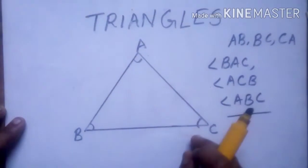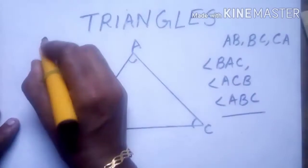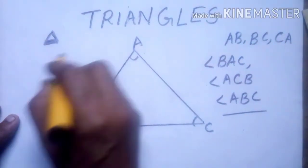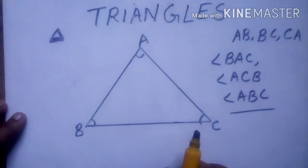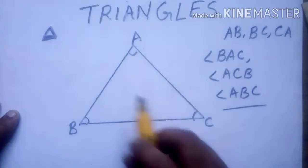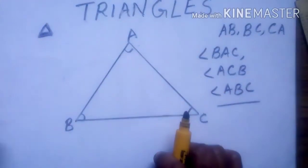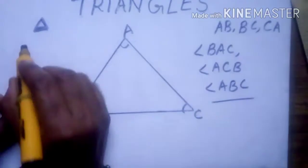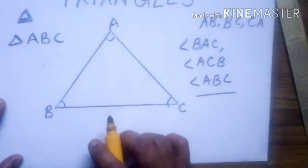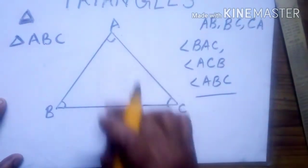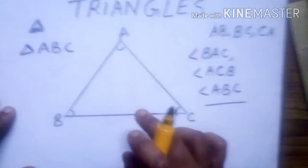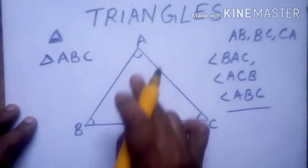This triangle is denoted by a triangle symbol. We denote the triangle using this symbol, and we write triangle ABC using that symbol. We name a triangle by its vertices.